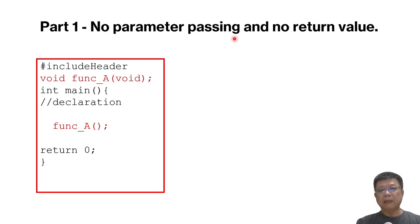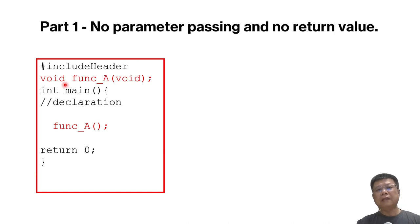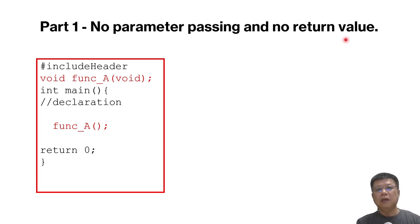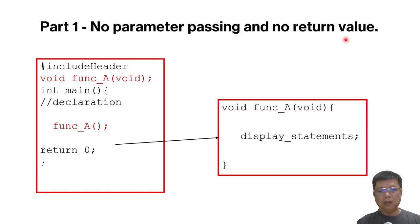For part one, we are talking about no parameter passing and no return values. After the header file, we should declare the function itself. If there is no parameter passing to the function and no return value, then we put void and void. Void in this case means none — we do not have anything to pass. And then in the main program, we have to call it. No parameter passing means the particular function can do everything itself.